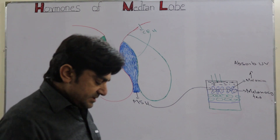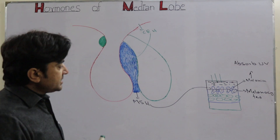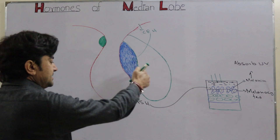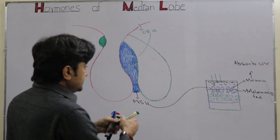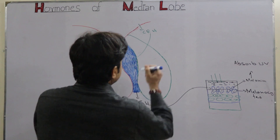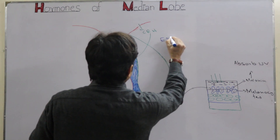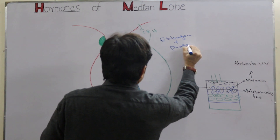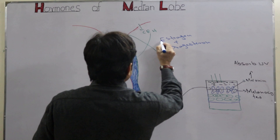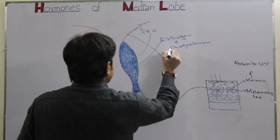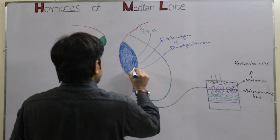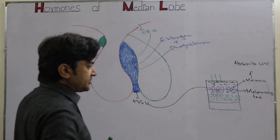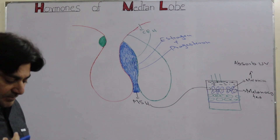Now, another two hormones: recent studies have shown that two other hormones also have a stimulatory effect on the cells of the intermediate lobe to produce and secrete MSH. These two hormones are estrogen and progesterone. Estrogen acts on the intermediate lobe cells, and in response they produce MSH, which then stimulates melanocyte cells to produce melanin pigment.